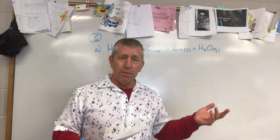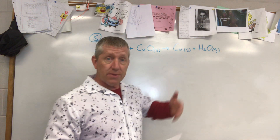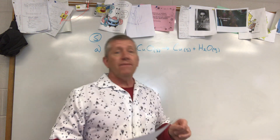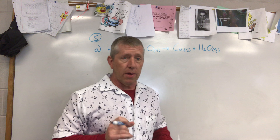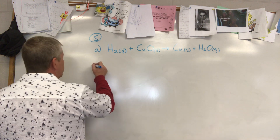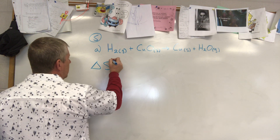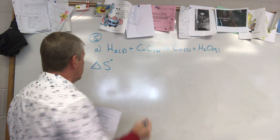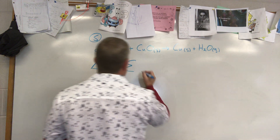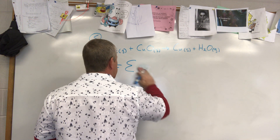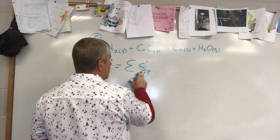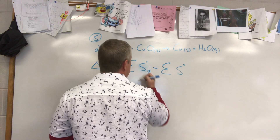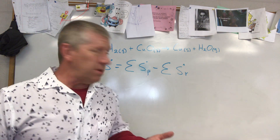This time instead of looking up Delta H values, I'm looking up Delta S values. Remember, in the back of your chemistry book you'll have Delta H, Delta S, and Delta G values - find the right column for Delta S. The equation to calculate the change in entropy under standard conditions is the sum of the entropies of the products minus the sum of the entropies of the reactants.